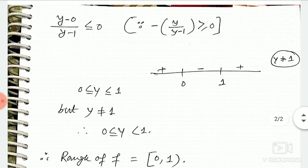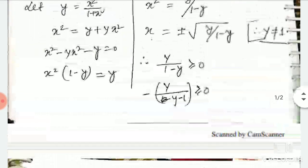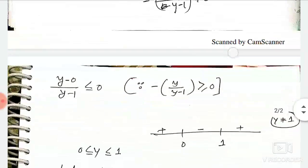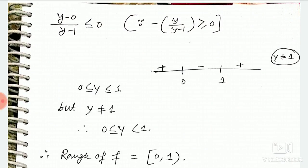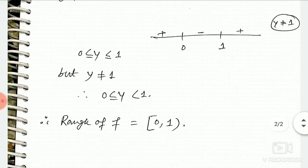But earlier we took what? We said earlier y ≠ 1. So 1 will not be there. So here y ≠ 1. That means y greater or equal to 0, less than 1.